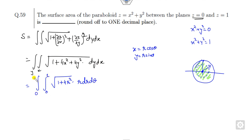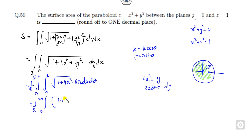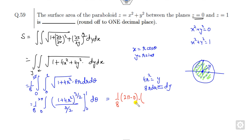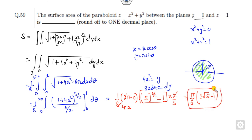The region is a complete circle, so r goes from 0 to 1 and θ from 0 to 2π. The integrand becomes √(1 + 4r²) · r dr dθ. Let u = 1 + 4r², then du = 8r dr. Factoring: multiply and divide by 8. The integral evaluates as [(1 + 4r²)^(3/2) / (3/2)] from 0 to 1, times (1/8) · 2π.